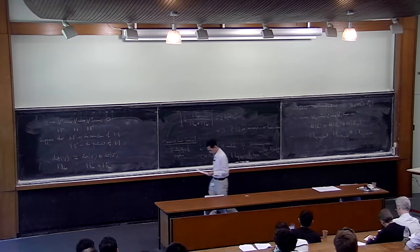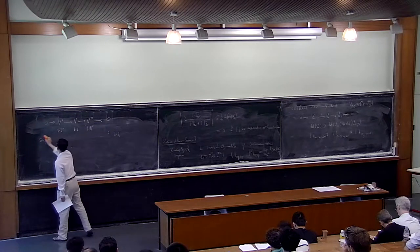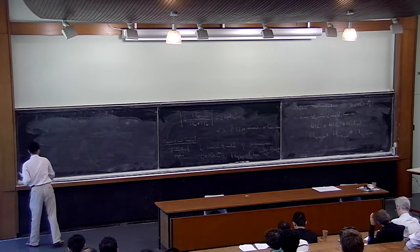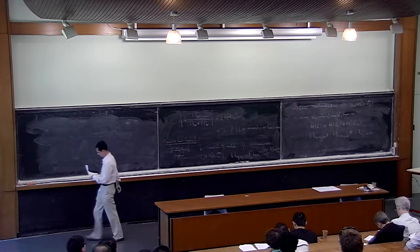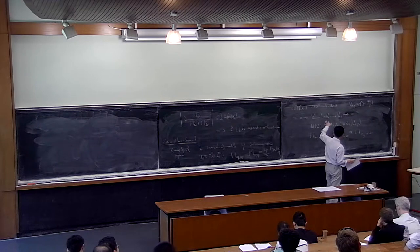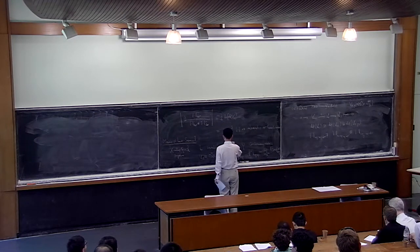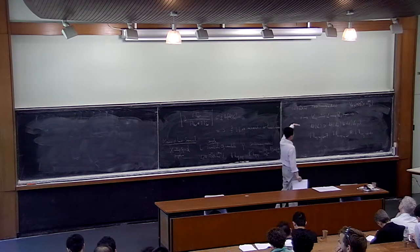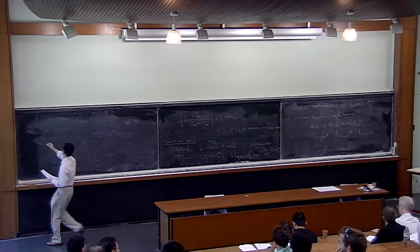L'analogue métrique du théorème de Hilbert-Samuel consiste à comparer ces deux métriques de déterminant. Malheureusement, je ne peux pas raconter la démonstration, parce que c'est un théorème très profond et assez dur. Je me contente de vous donner une remarque importante : on a besoin d'une condition de positivité, non seulement pour L. J'ai oublié de dire que vous avez besoin de supposer que L est ample, sinon ça bloque au niveau géométrique. Il faut aussi donner une condition de positivité sur la métrique φ.